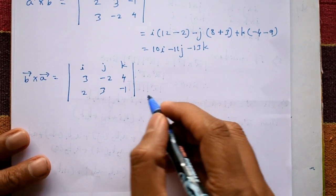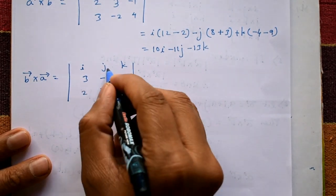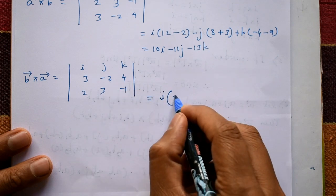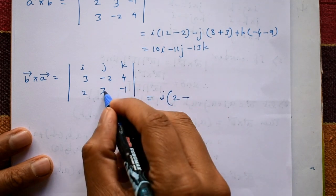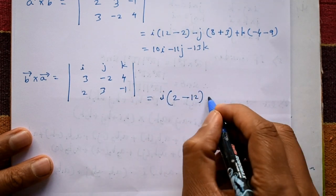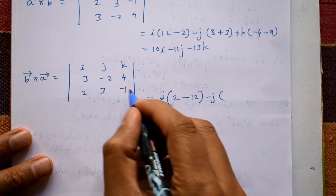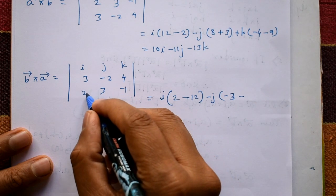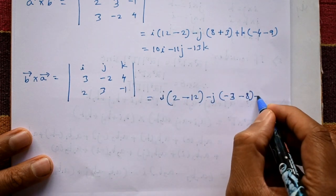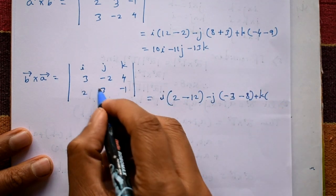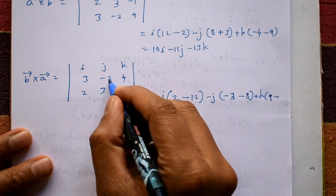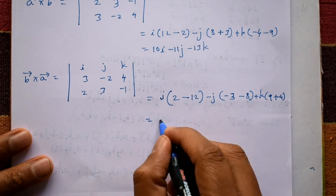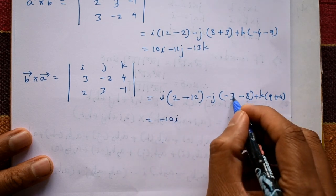Expanding: i into (minus 2 into minus 1 minus 3 into 4) gives i(2 minus 12) = minus 10i. Minus j into (3 into minus 1 minus 2 into 4) gives minus j(minus 3 minus 8) = plus 11j. Plus k into (3 into 3 minus 2 into minus 2) gives k(9 minus minus 4) = plus 13k.